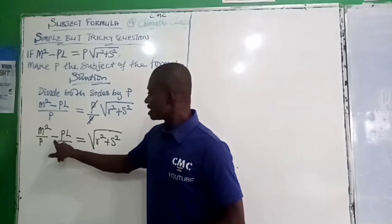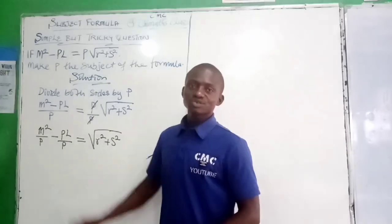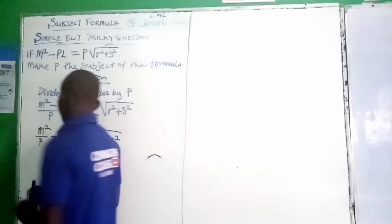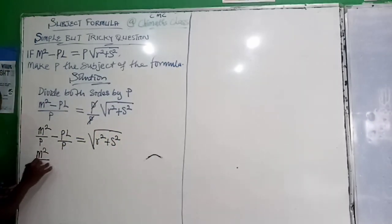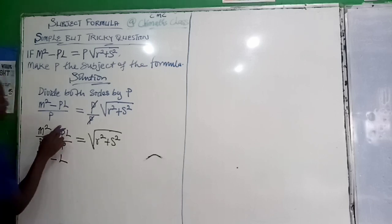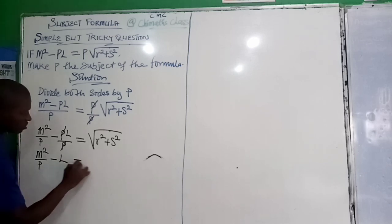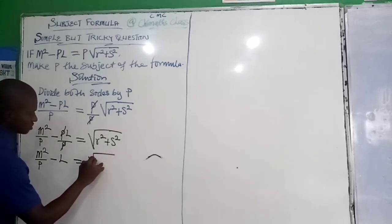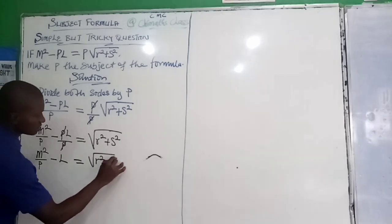Since we want to make P the subject of the form, we will add L to both sides so that we have M squared over P minus L is equal to root R squared plus S squared.